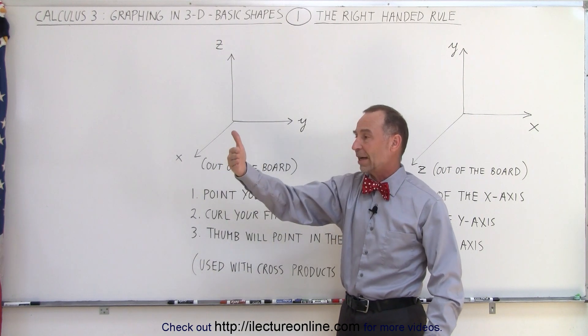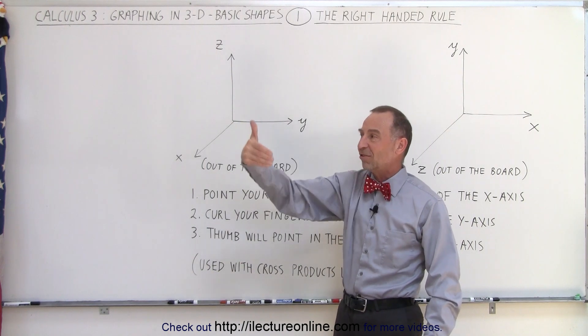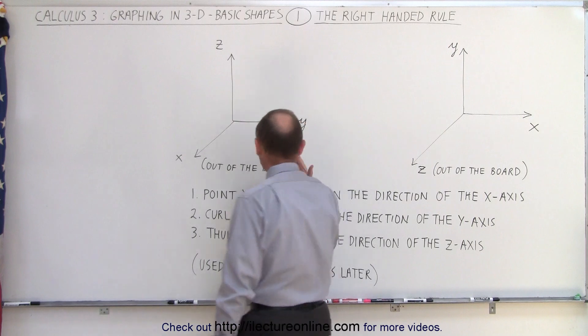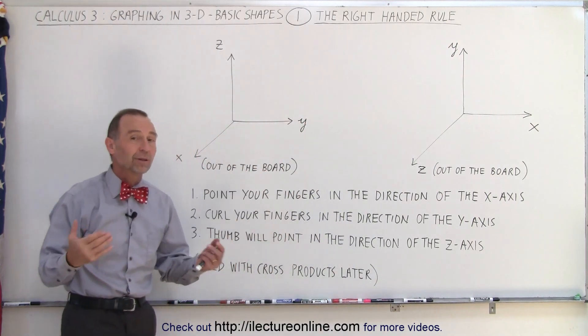That means I have to have my hand like this. So x-axis, curl fingers in the y-axis, and the thumb will point in the z-direction, which is straight up. So there you can see that using the right-hand rule, those are the exact same representation of three-dimensional space. And that's how we can check it out.